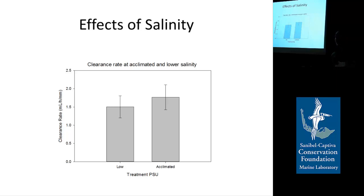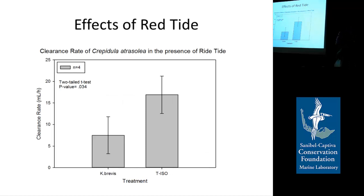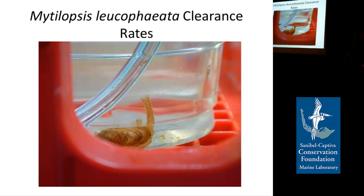I tried lowering the salinity for the Crepidula experiments. The first preliminary experiment seemed like they didn't like lower salinities at all, but after a few more experiments it seemed that it decreases their clearance rate, though this relationship wasn't significant — so it's hard to say definitively if it was negatively affecting them. I also added red tide to some experiments, and they did have a significant decrease in their clearance rate. They were very negatively affected by red tide even at just 10 cells per milliliter, which isn't even technically a full bloom.